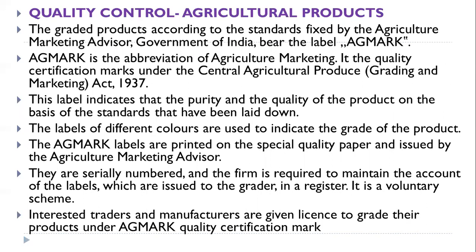Regarding quality control in agricultural products: graded products conforming to standards fixed by the Agriculture Marketing Advisor, Government of India, bear the label AGMARK. The abbreviation AGMARK stands for Agriculture Marketing — underline this important point. AGMARK is a quality certification mark under the Central Agriculture Produce (Grading and Marketing) Act, 1937. This label indicates the purity and quality of the product based on standards that have been laid down. Labels of different colors are used to indicate the grade of the product, and AGMARK labels are printed on special quality paper.